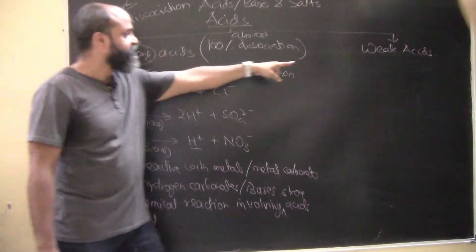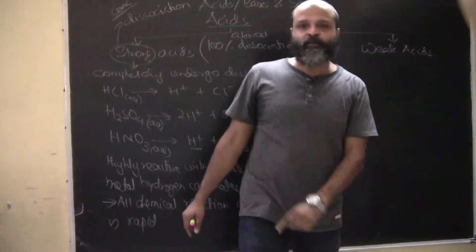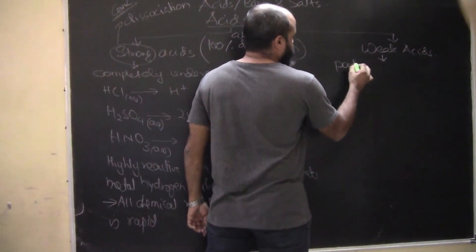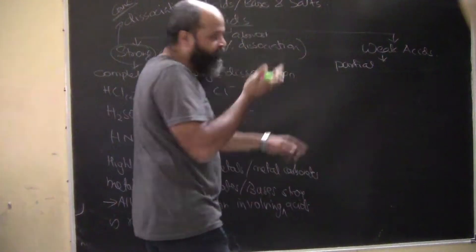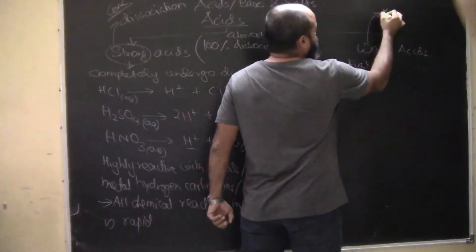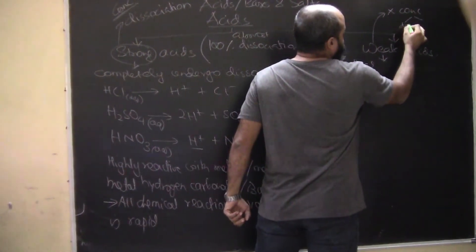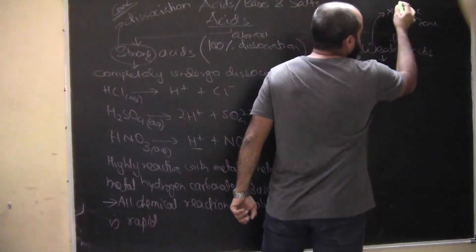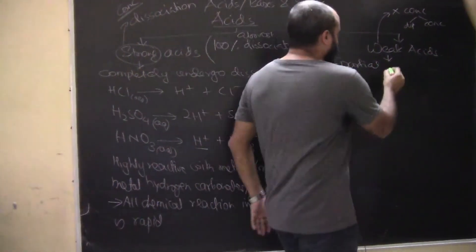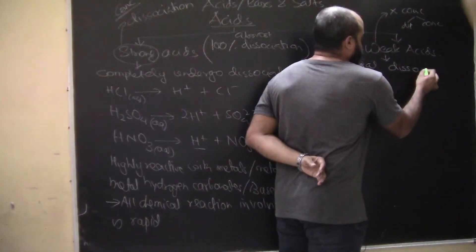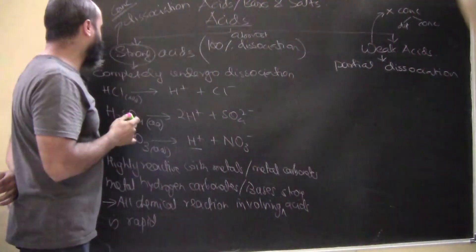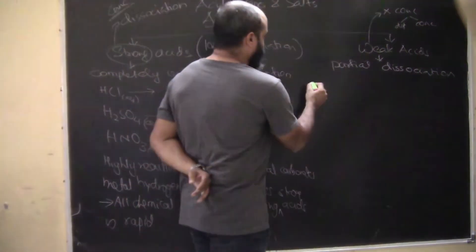Weak acids undergo partial dissociation. Again, the term weak is not correlated to concentration - concentration can either be dilute or concentrated, and this is not related to that. It is related to dissociation. So in weak acids, partial dissociation will happen.